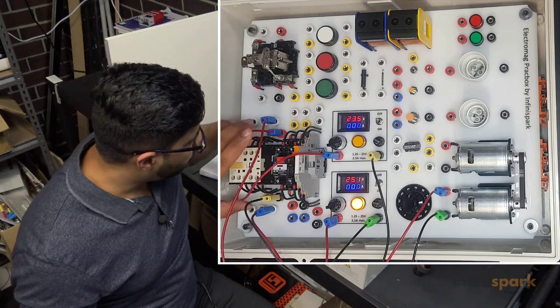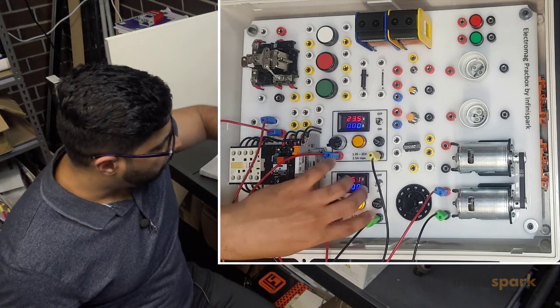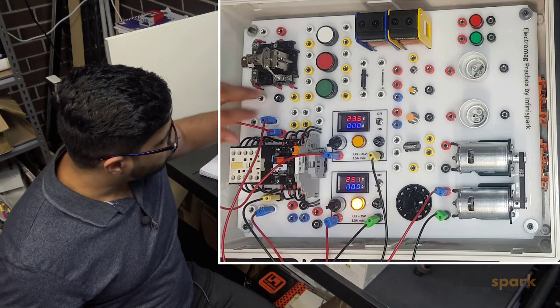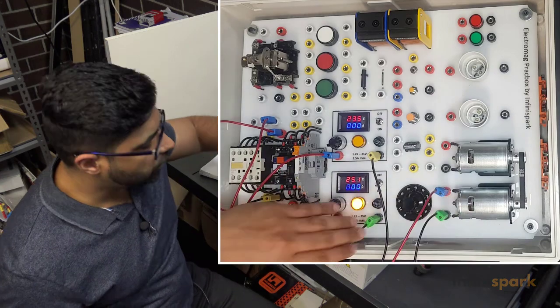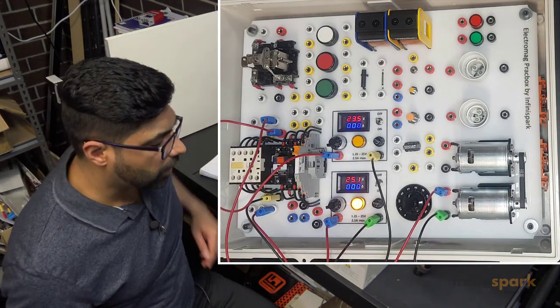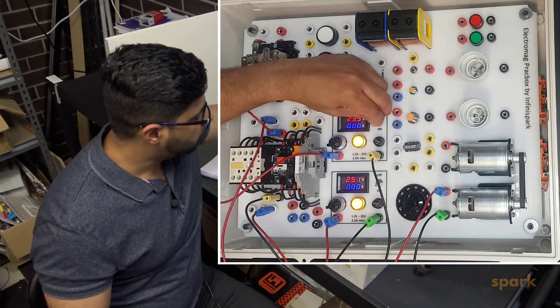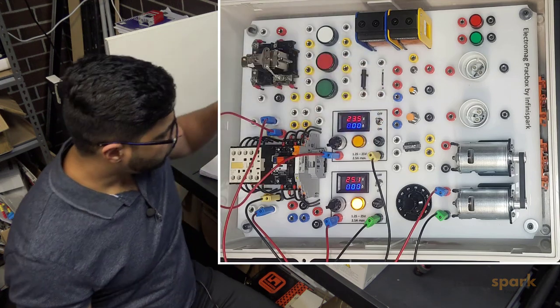As soon as the contactor coil is powered up, the power through this power circuit goes to this contact here and comes out to this motor and finishes the circuit that powers our motor. Let's do it again.